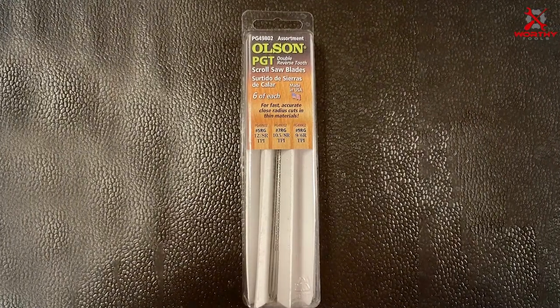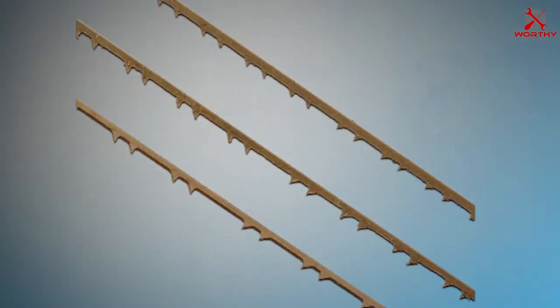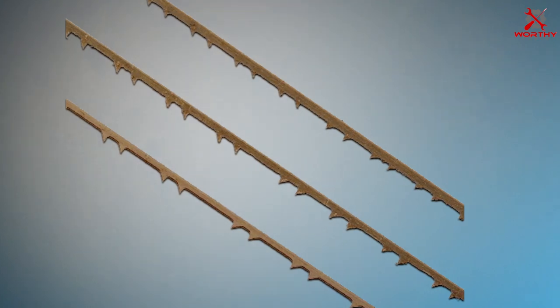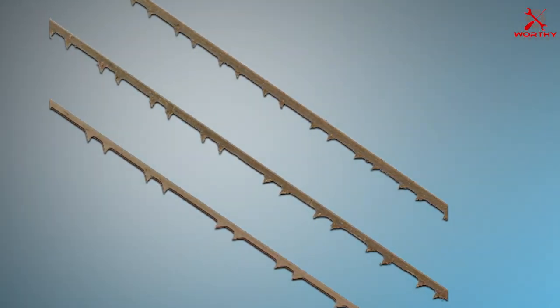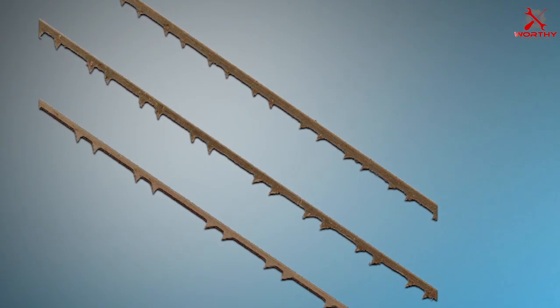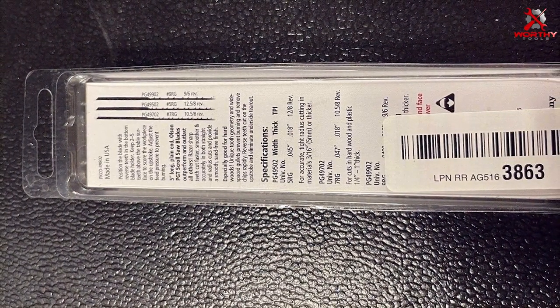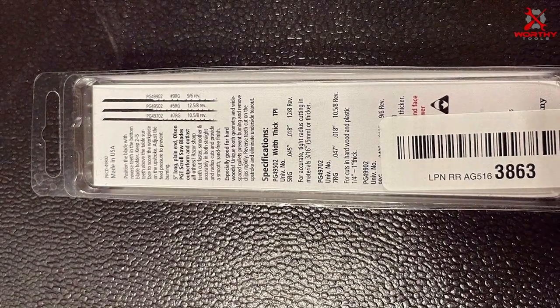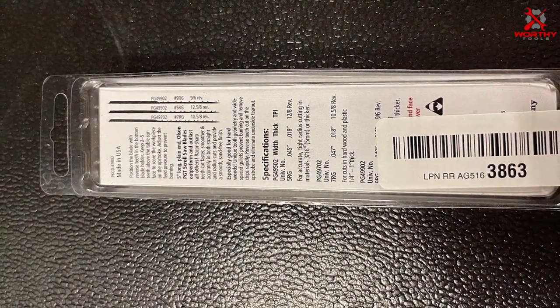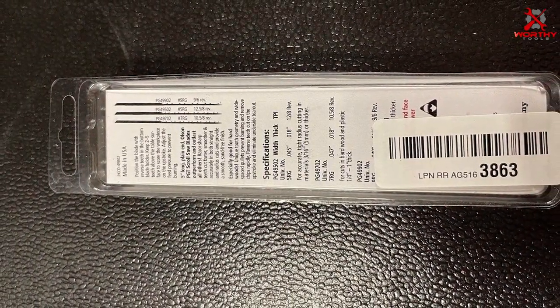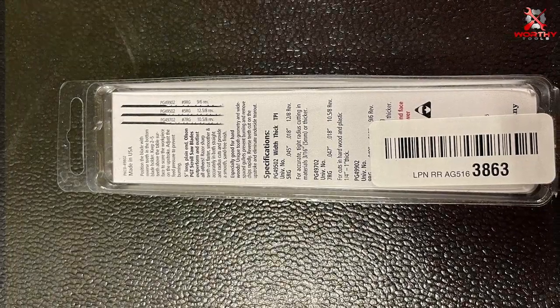Number five: Olsen Saw PG49000-802 Precision Ground Scroll Saw Blade. The Olsen Saw PG49000-802 precision ground scroll saw blade represents a pinnacle of craftsmanship and engineering in the realm of woodworking tools. Characterized by its precision ground teeth, this blade ensures that every cut you make is not just accurate but remarkably keen and crisp as well. It's the kind of tool that woodworkers who prioritize perfection can't afford to overlook.